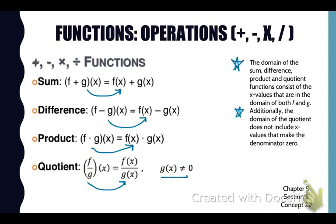Usually you're going to need to name a domain if you have to do an operation with a function. The domain of a sum, difference, or product and quotient consists of the x values that are in the domain of both the original functions. Additionally, the domain of the quotient does not include x values that make the denominator zero.